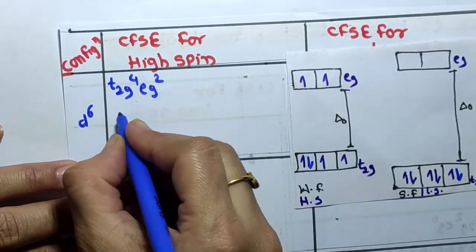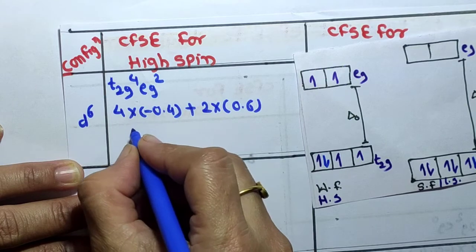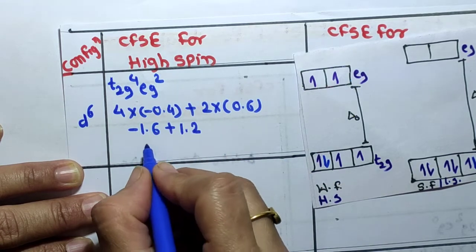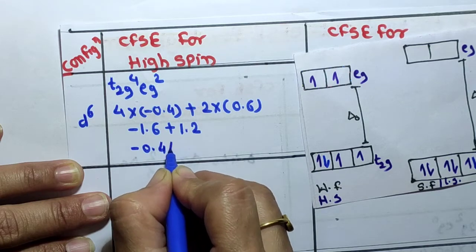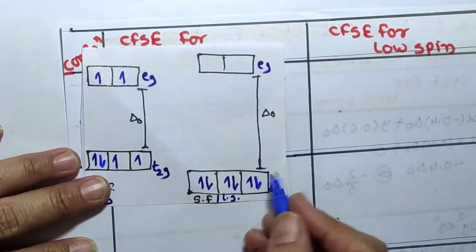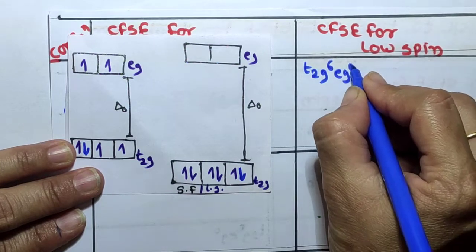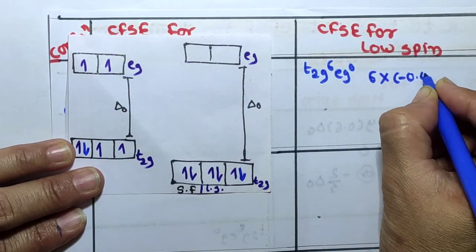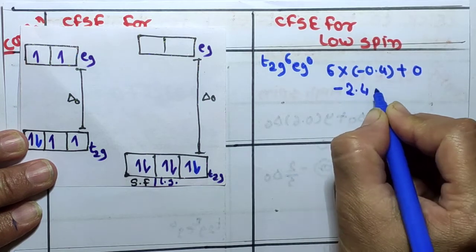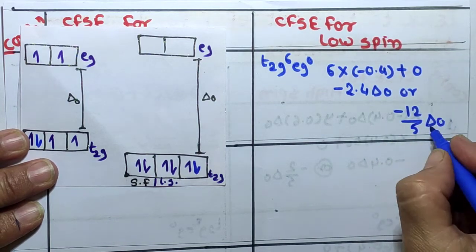For the d6 configuration in high spin (weak field): t2g = 4, eg = 2. CFSE = 4 × (−0.4) + 2 × (0.6) = −1.6 + 1.2 = −0.4 ΔO, or −2/5 ΔO. For low spin (strong field): t2g = 6, eg = 0. CFSE = 6 × (−0.4) = −2.4 ΔO, or −12/5 ΔO.